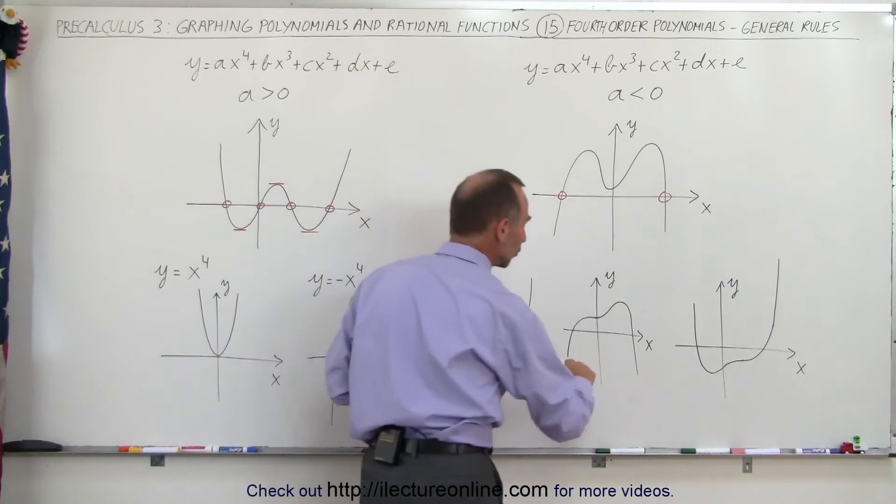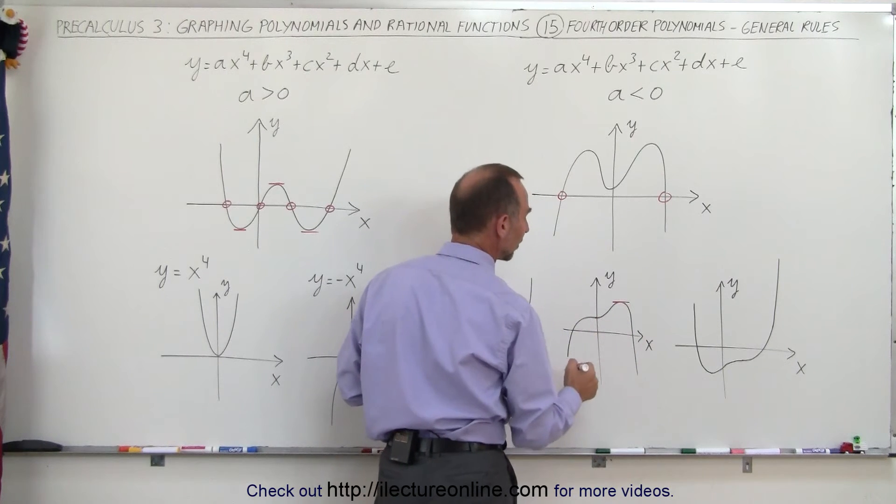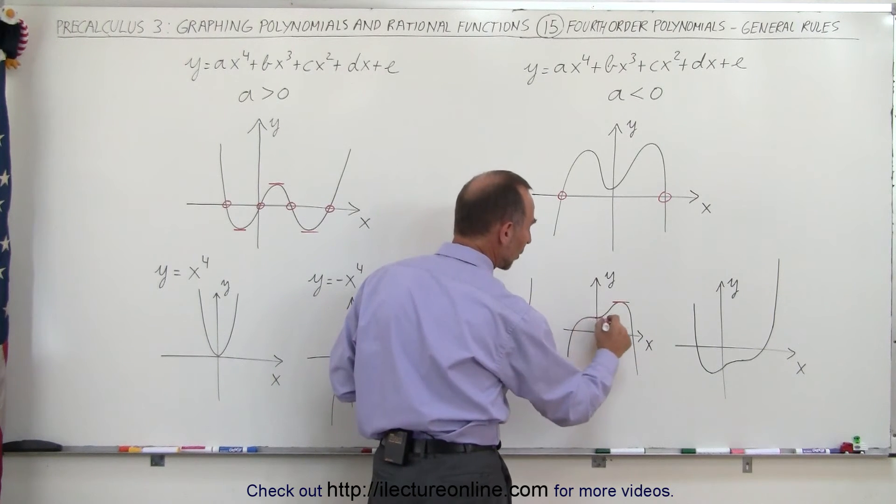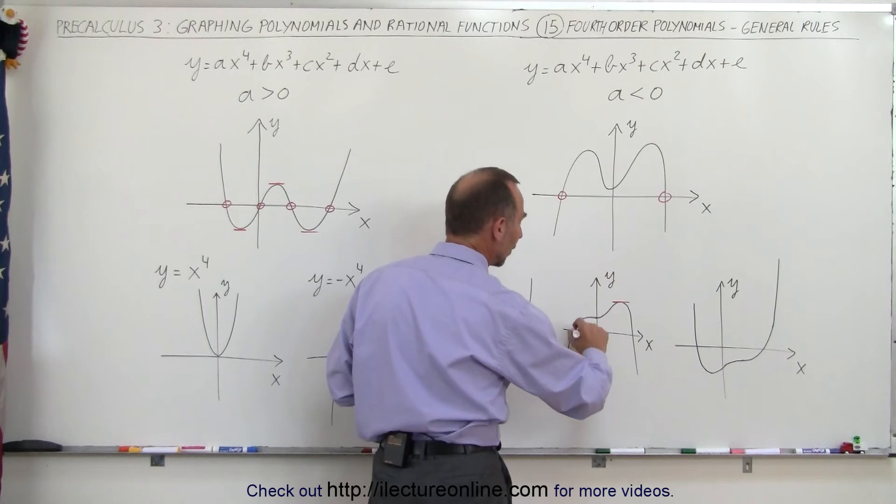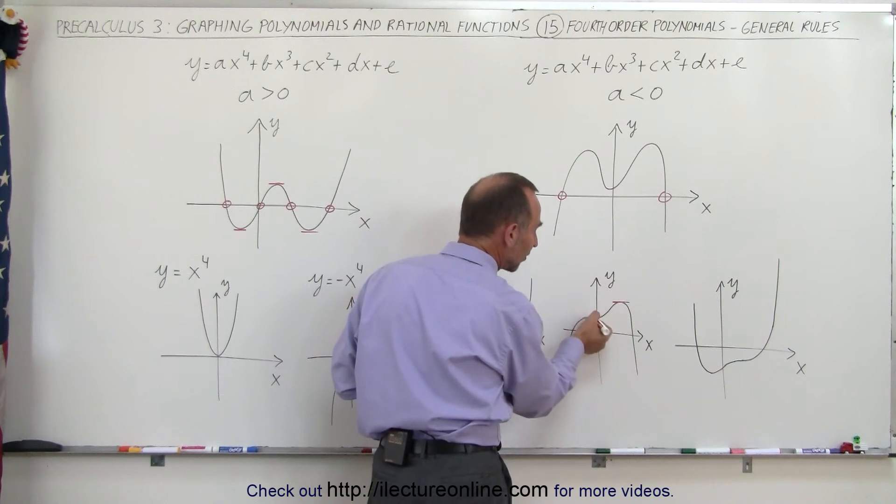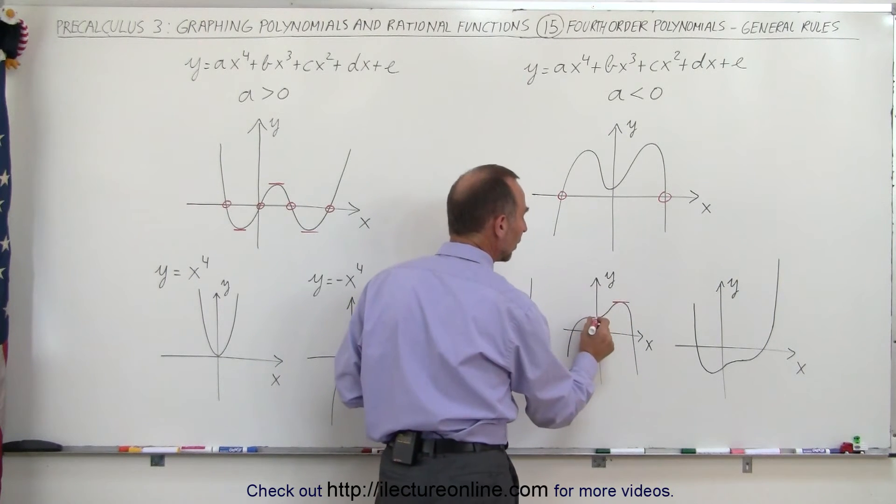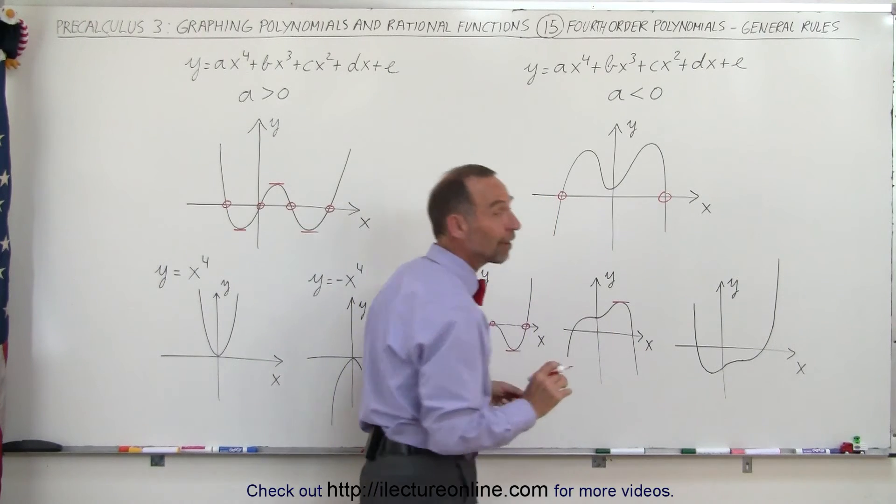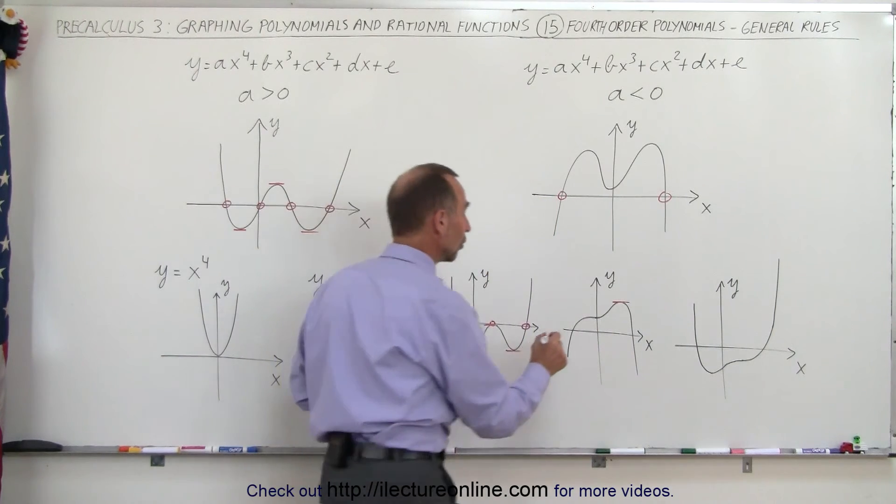But here, notice you only have one maximum value. And here we have what we call an inflection point. It was going to go down, but then it stops and continues up in this way so that you really don't have a maximum value there. So in this case, there's only two roots.